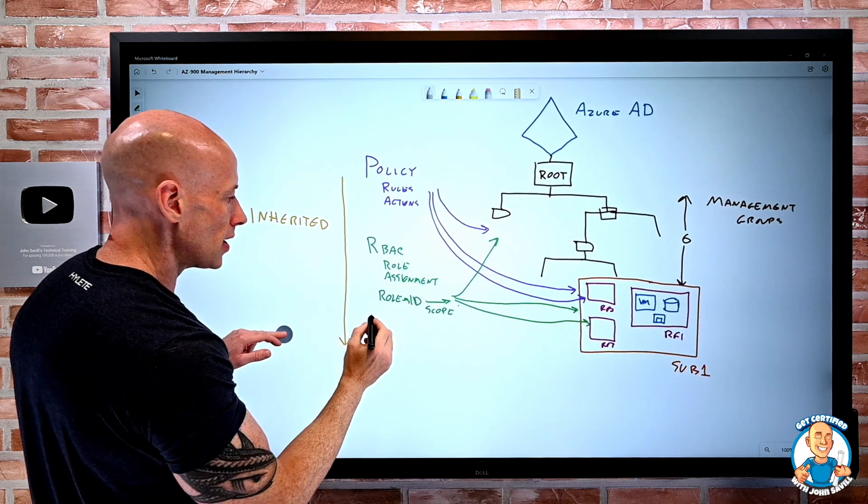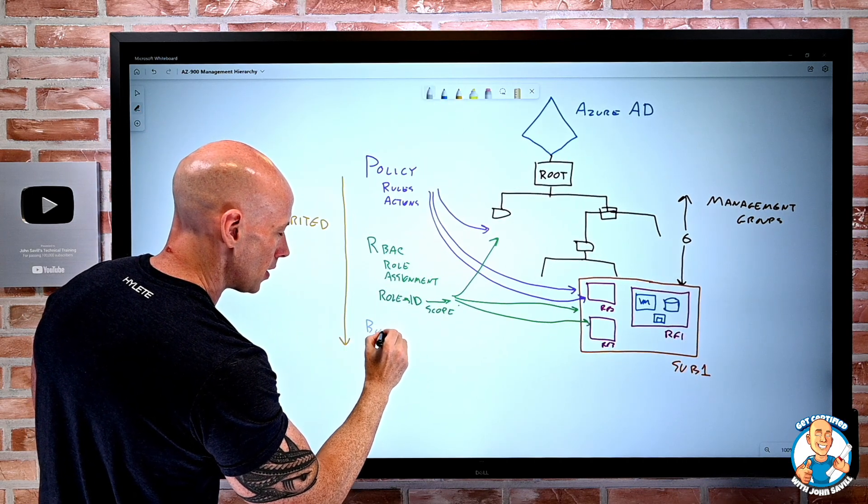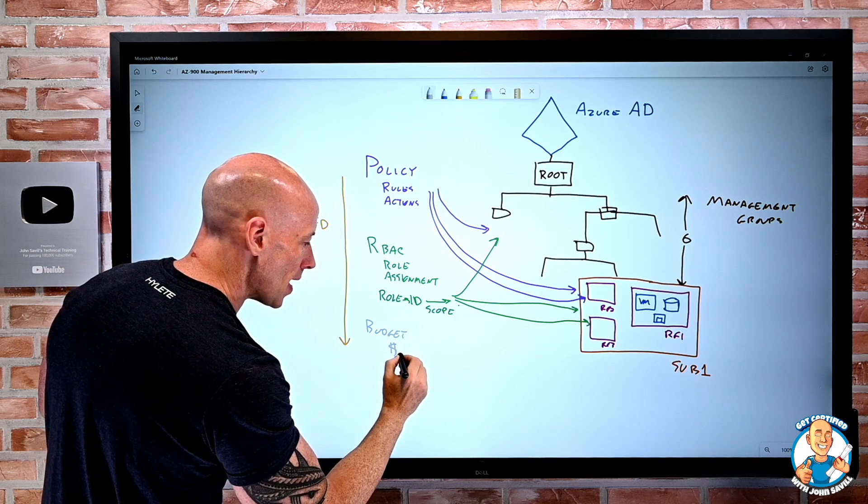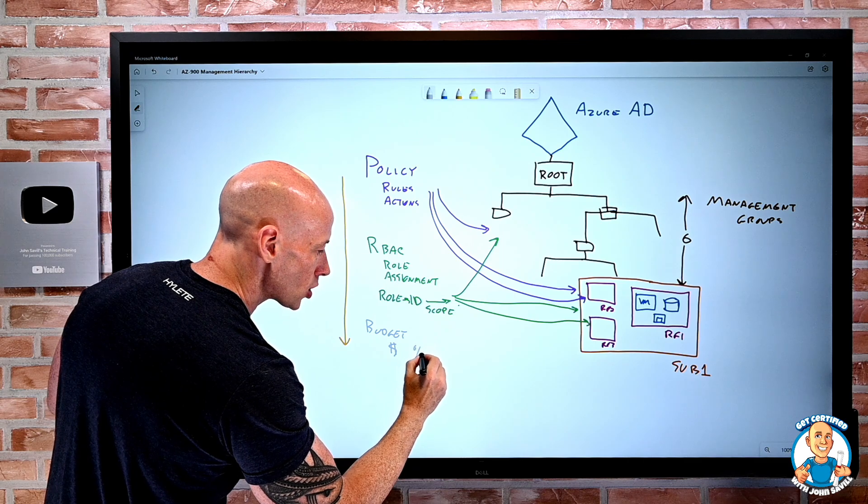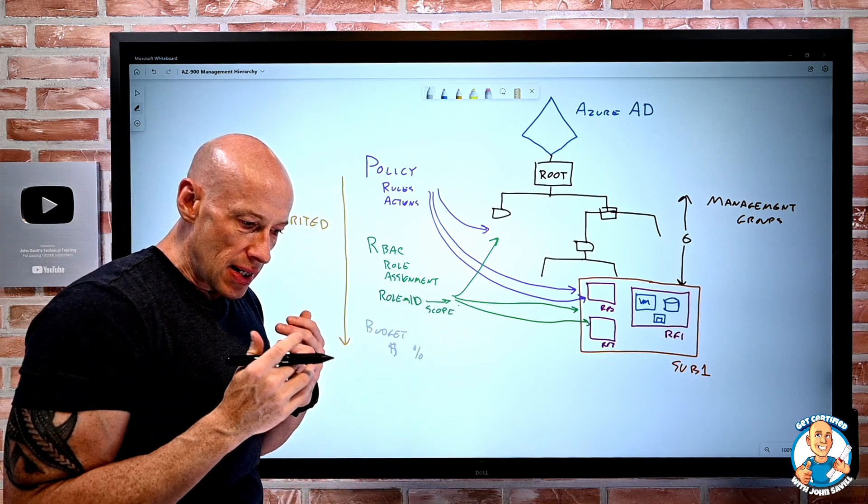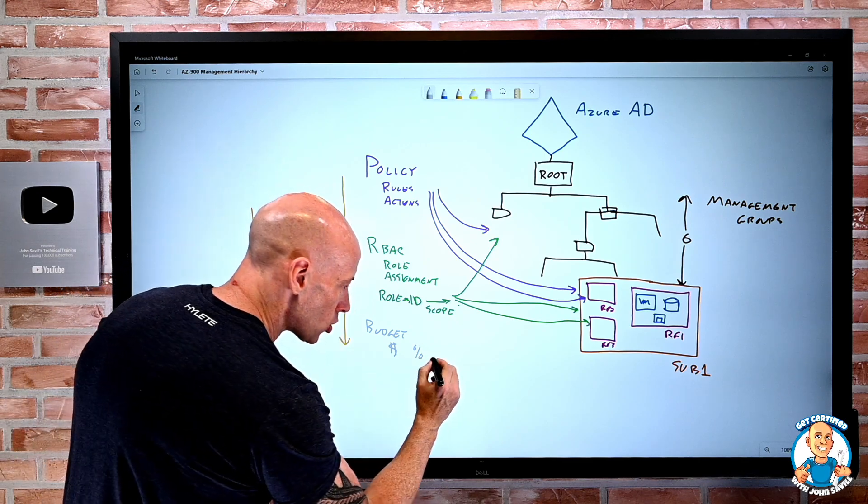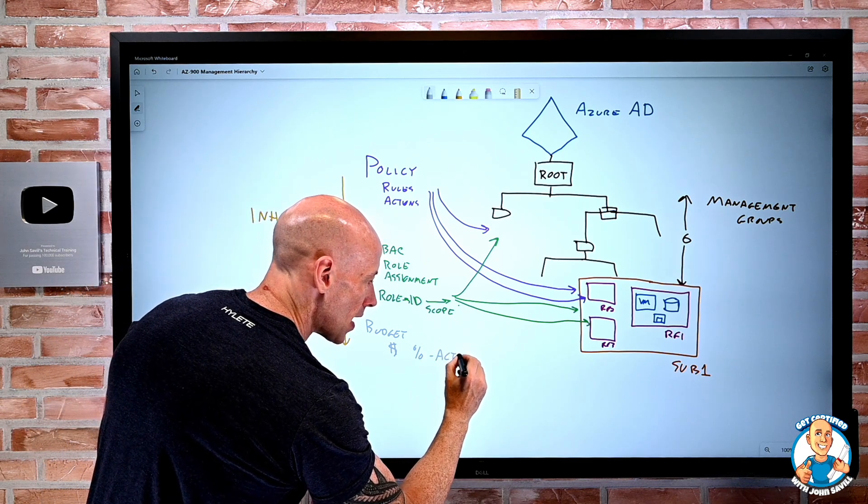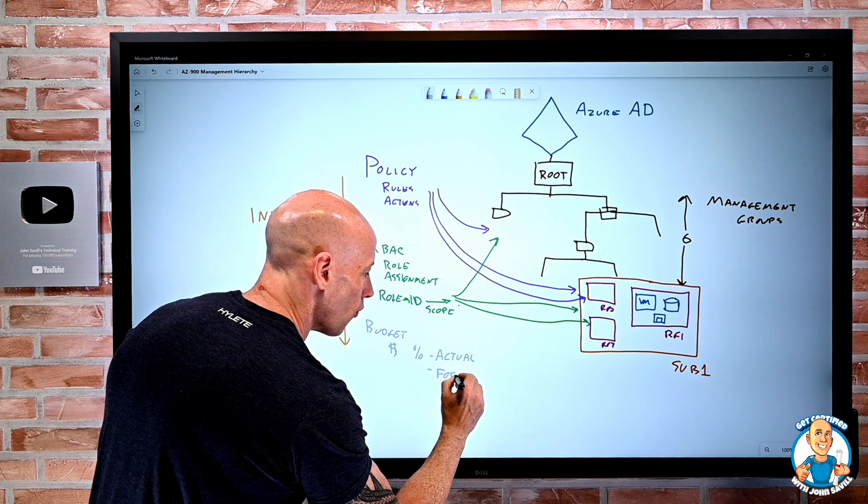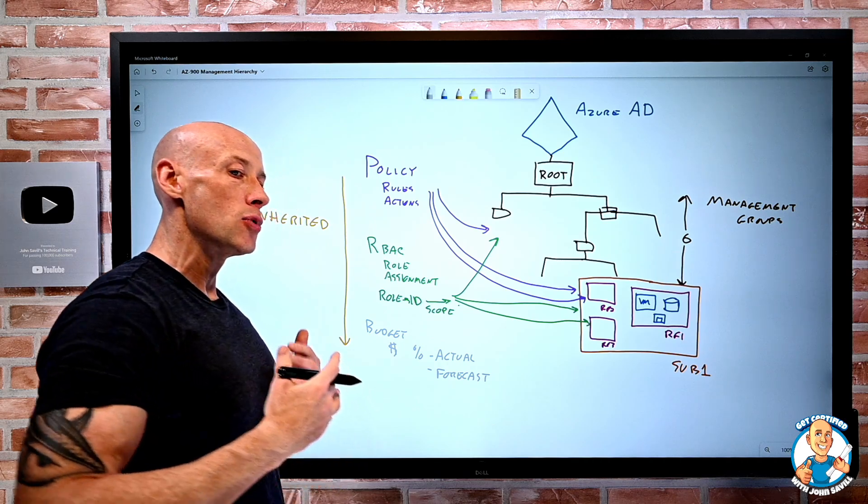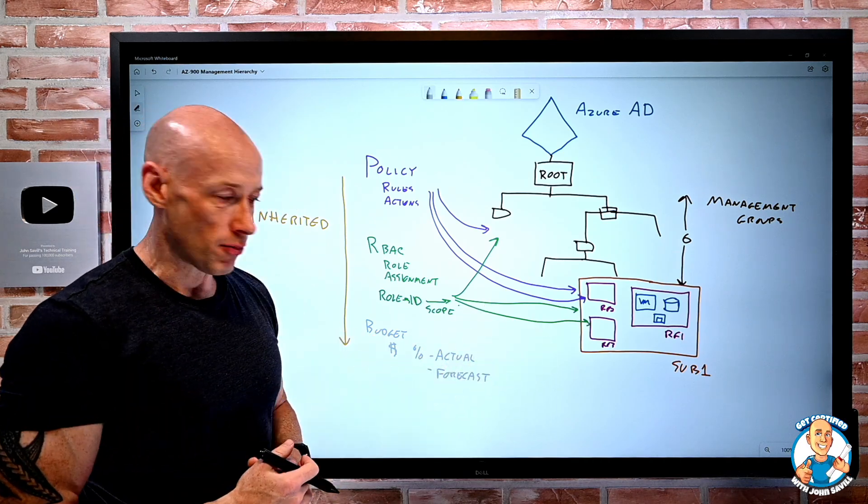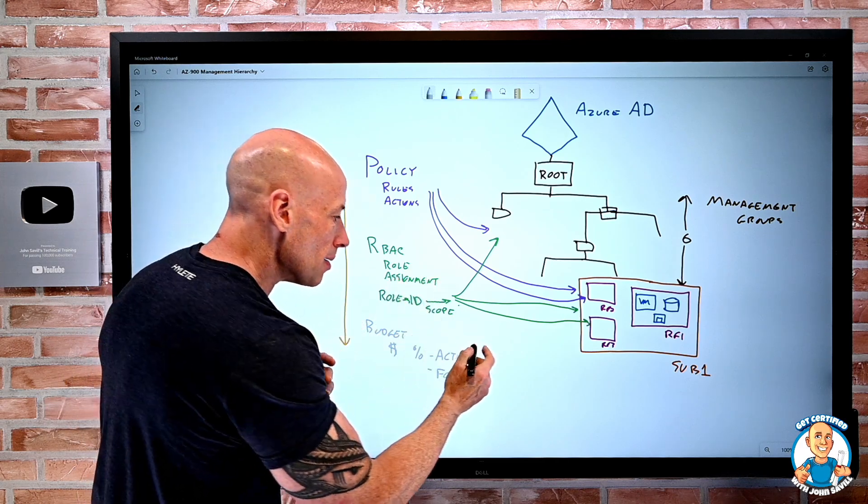And then finally, we have the idea of budget. So I can set a certain dollar amount and then a threshold of that dollar amount. Now, that dollar amount could be done in terms of actual use. I am at 80% of my budget or it can be based on forecast. If I carry on the trend that I'm doing, I'm going to hit 120% of my budget.